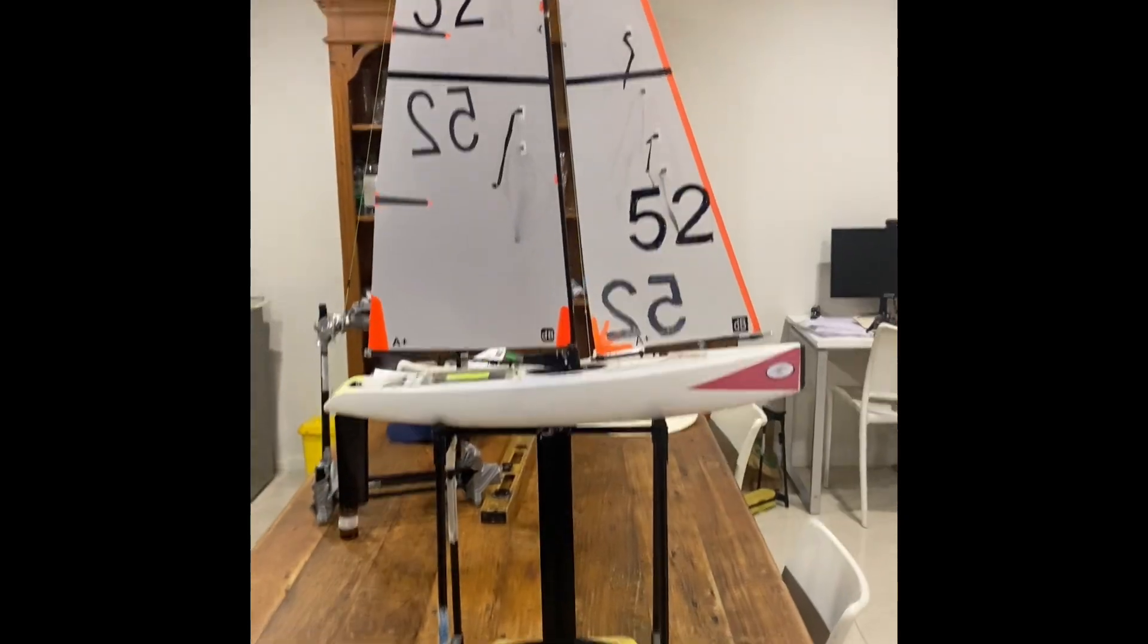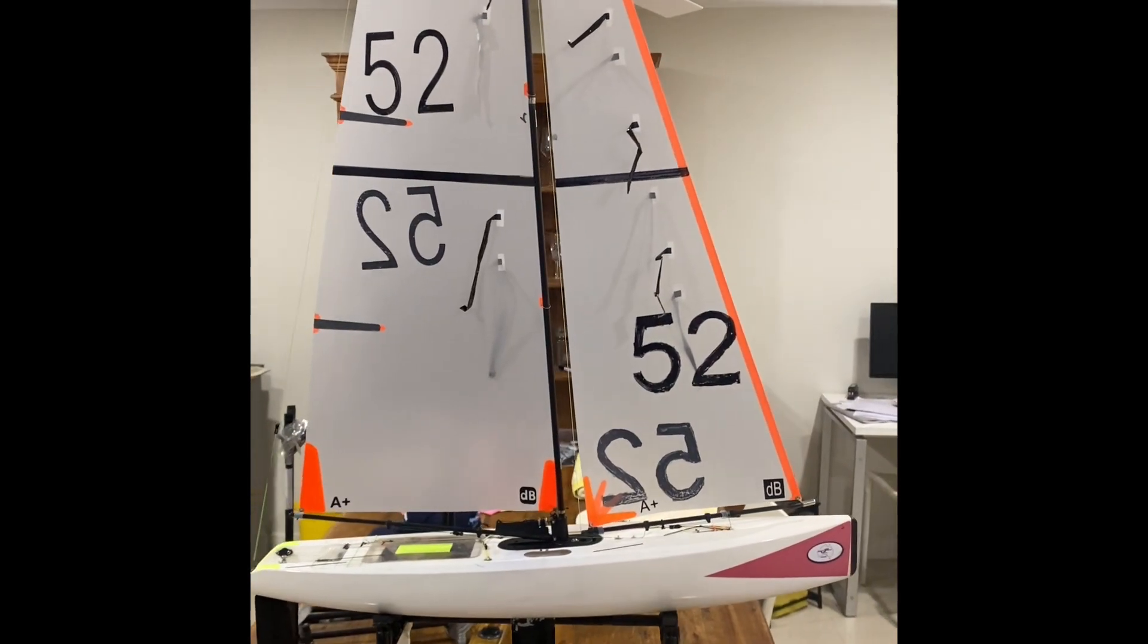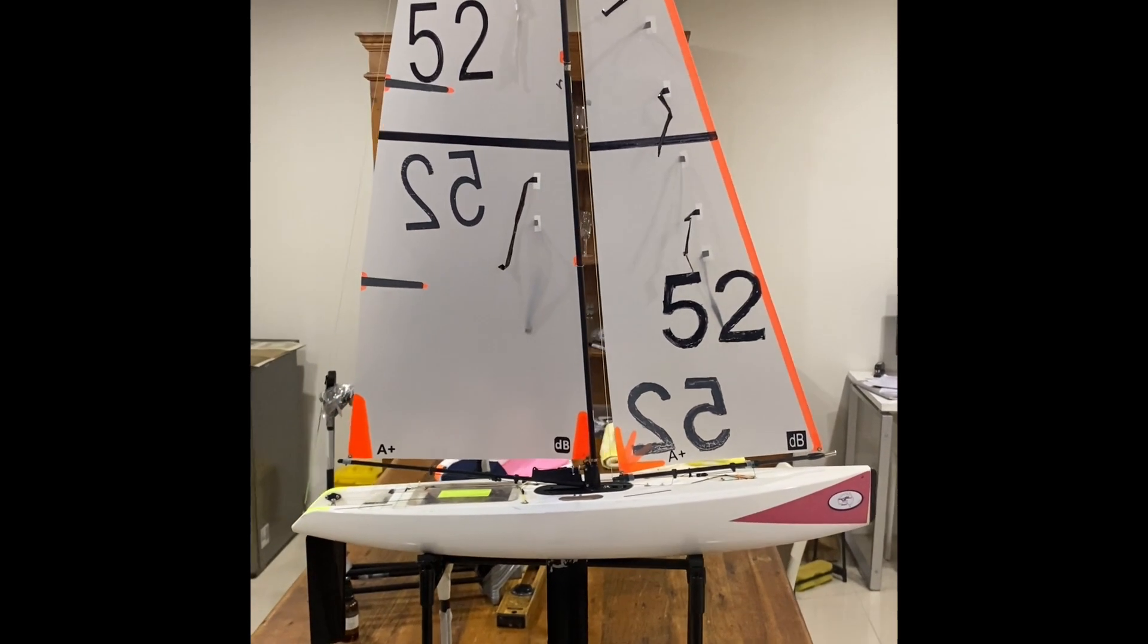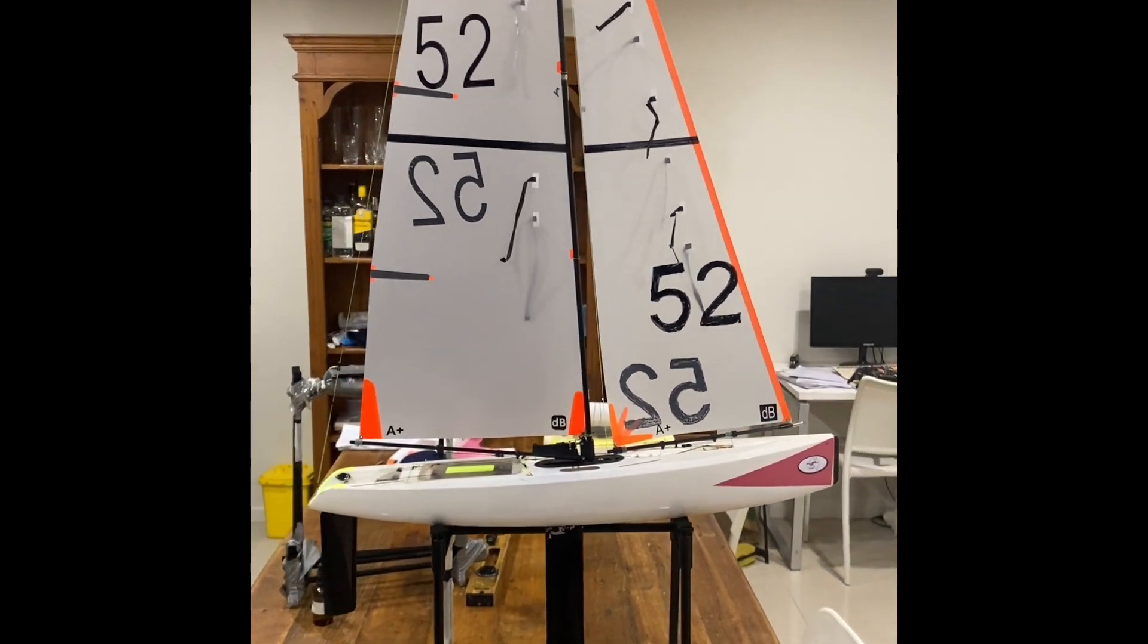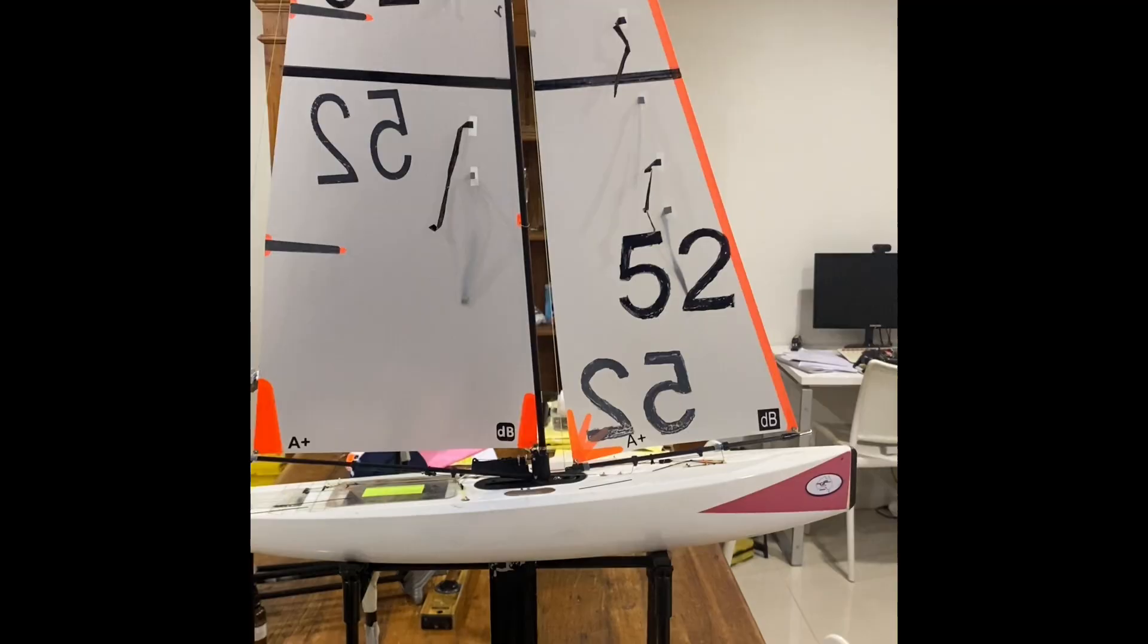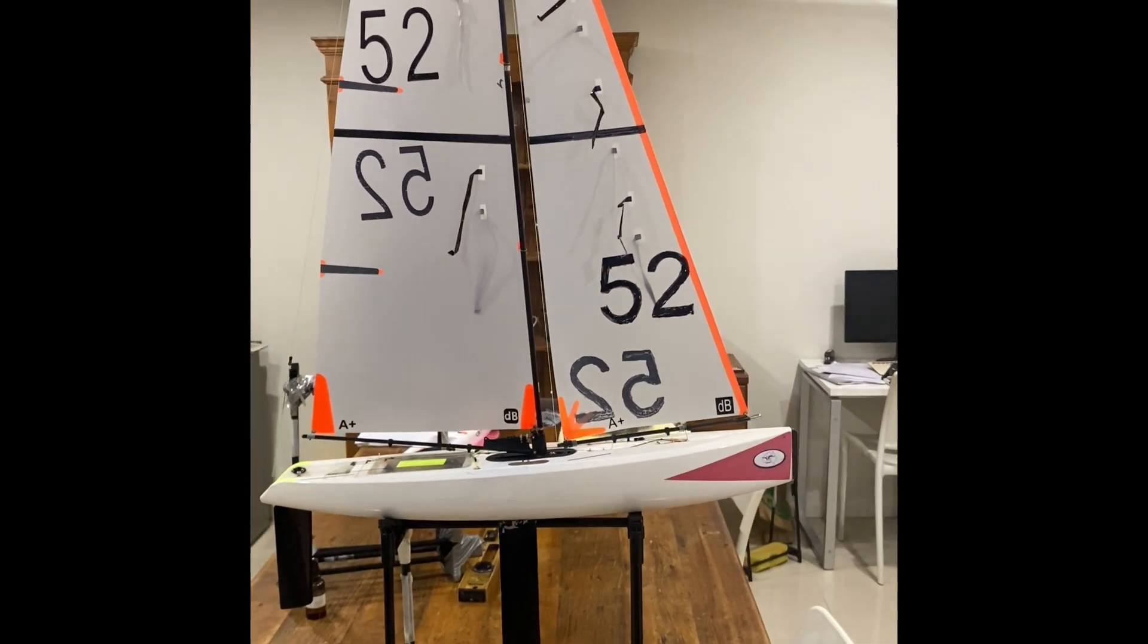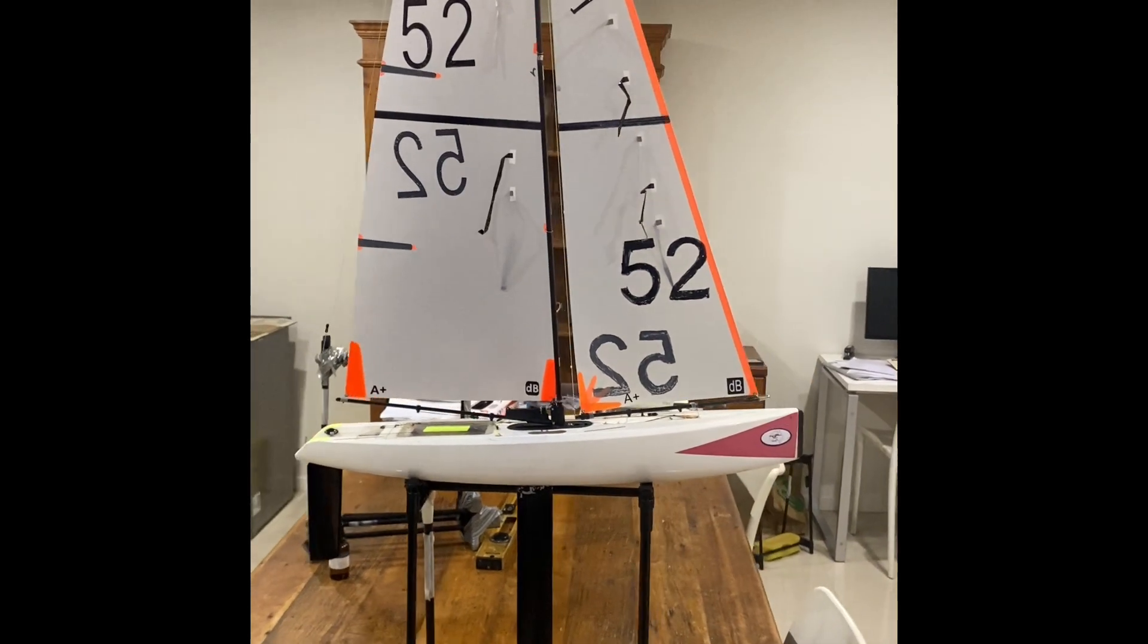What you find is the longitudinal center of gravity on the A and B rig is quite different from the A+ rig because of the weight difference of the mast and the sails. So there's slight variations which require some adjustments to the battery position to ensure that your battery is balanced, the boat is balanced, and your boat is in the optimum position for sailing upwind.